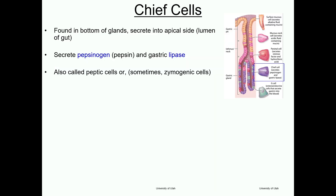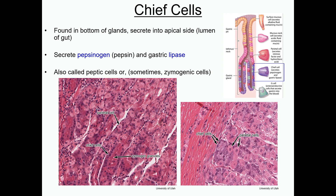The next major cell type in the stomach epithelium is the chief cell. These cells are found in the bottom of the glands, and like mucous and parietal cells, they secrete into the apical side of the cells — that is, into the lumen. Chief cells are more basophilic than parietal cells. They secrete pepsinogen, which is converted to pepsin in the lumen, and gastric lipase, which helps begin digestion of triacylglycerides. These are often, but somewhat incorrectly, called zymogenic cells because they produce a zymogen, pepsinogen. The H&E section shows the chief cells with their characteristic granules and highlights the different appearances of the chief and parietal cells.